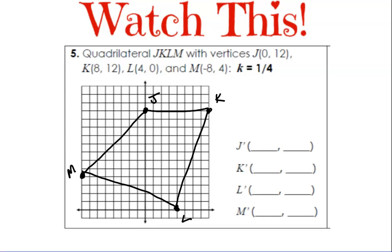All right, remember the rule. We take our coordinates and we multiply by our scale. 0 times 1/4, 0. A 4, or 12 divided by 4, 3. So that's J prime. Let's just do all of our prime points now. 8 times 1/4, 2. 12 times 1/4 is 3. 4 times 1/4 is 1. 0 times 1/4 is 0. And negative 8, I'm here. Negative 8 times 1/4 and 4 times 1/4. All right. We're just going to graph these points now.